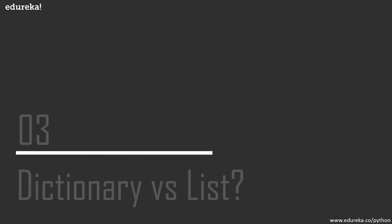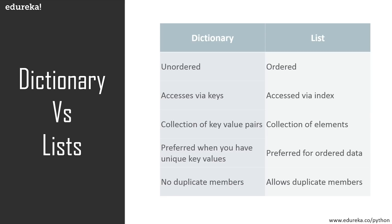Let's understand how dictionary is different from a list. First, a list is ordered, but the dictionary is unordered. Next, a list has indexes, but in order to access elements in a dictionary, we use the keys as indexes. A list is a collection of elements, but in a dictionary we have key-value pairs as elements. List is preferred for ordered data, but dictionary is preferred when the data has unique key values. Lists have duplicate elements, but in a dictionary we do not have duplicate keys, although values can be duplicated.